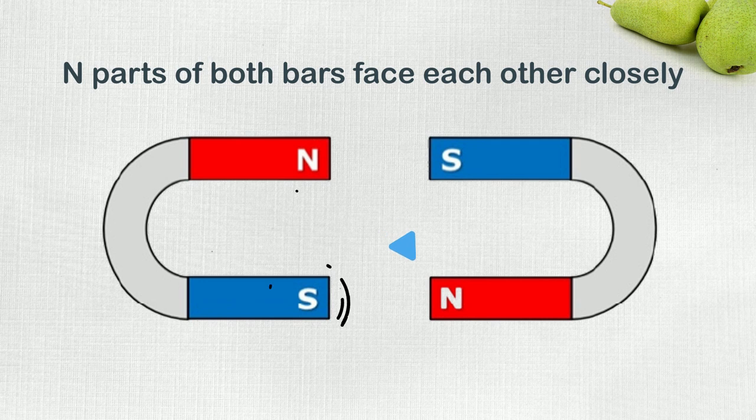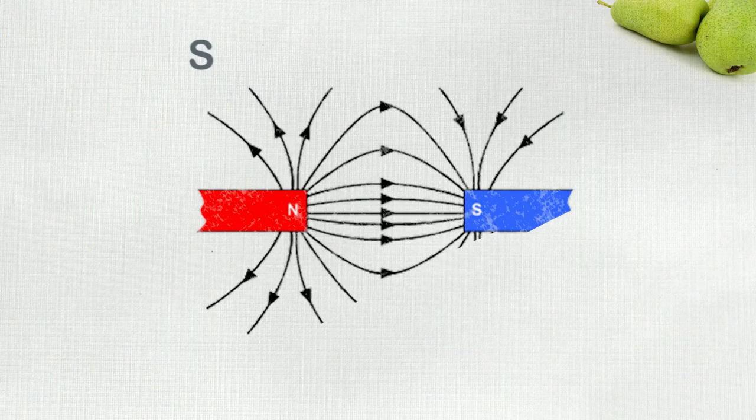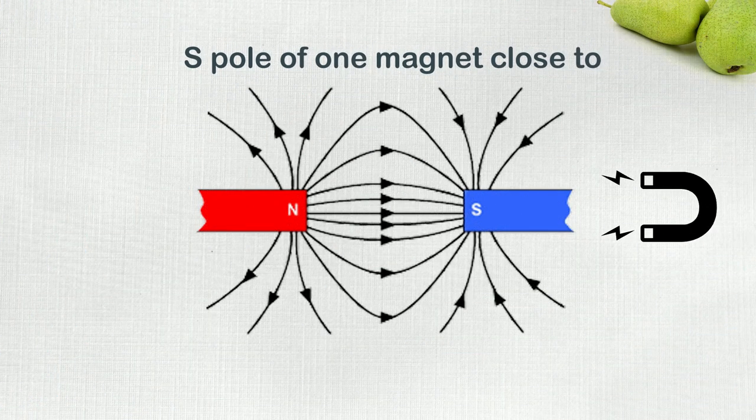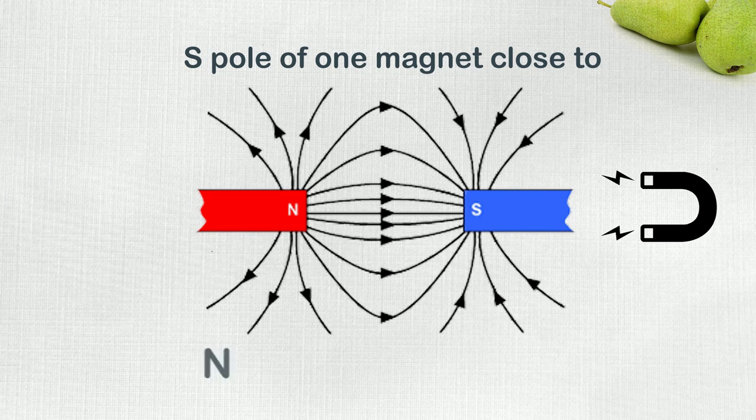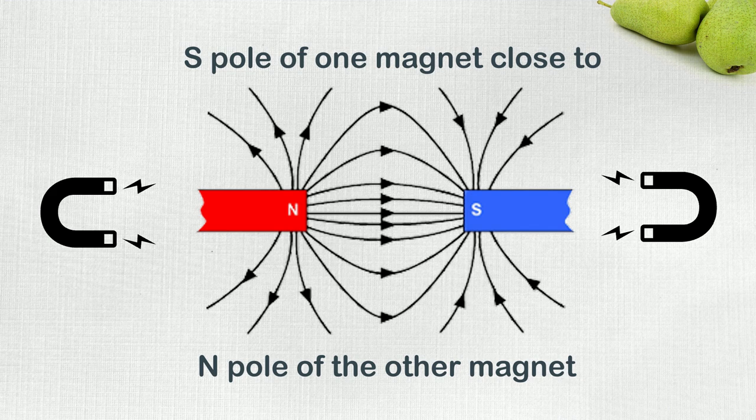However, the opposite poles attract each other. For instance, if we brought S pole of one magnet close to the N pole of the other magnet, they will attract and instantly stick to each other.